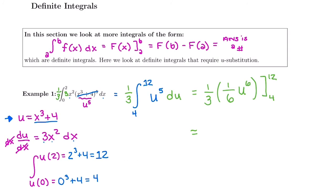So now I could probably grab my calculator. I might multiply these fractions together to make it faster to plug into my calculator. 1 times 1 is 1, 3 times 6 is 18. So I have 1/18 of u⁶. So fundamental theorem says plug in your upper bound first: 1/18 of 12⁶ minus 1/18 of 4⁶.